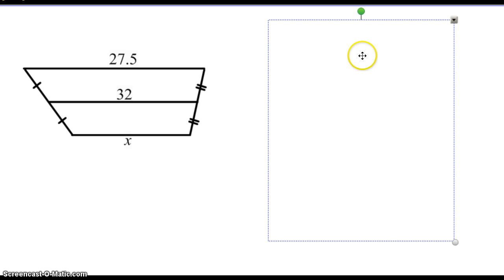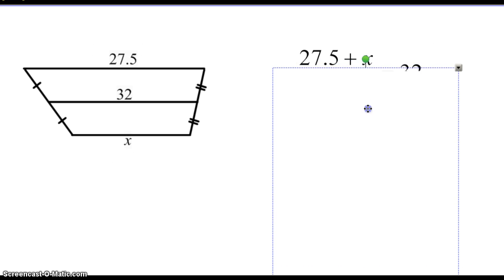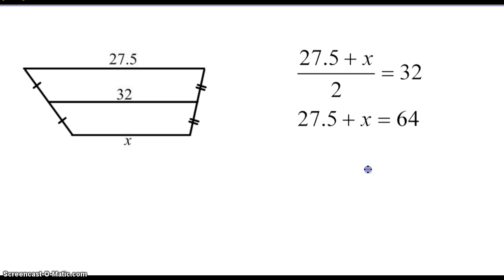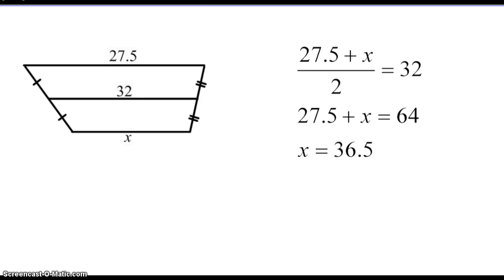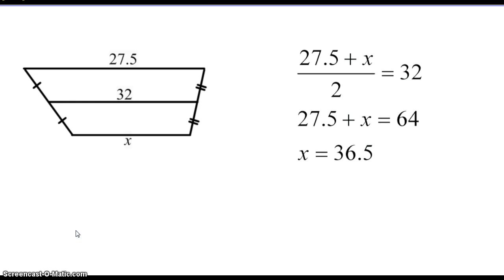So what you should have done is take the top and the bottom. So that's 27.5 and x. We're going to divide it by 2 because it's an average and set it equal to 32. So that's where your equation should come from. Algebraically, just to solve, we're going to multiply by 2 to get rid of it. So we're going to get 27.5 plus x equals 64, and then we're going to subtract, and our answer is 36.5.